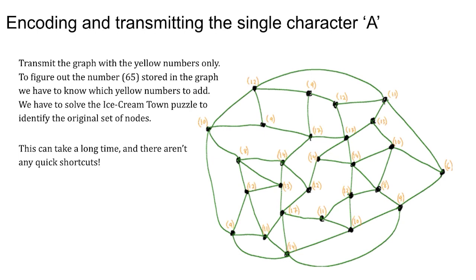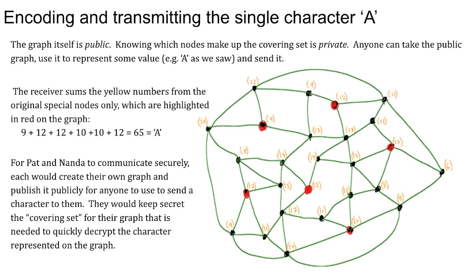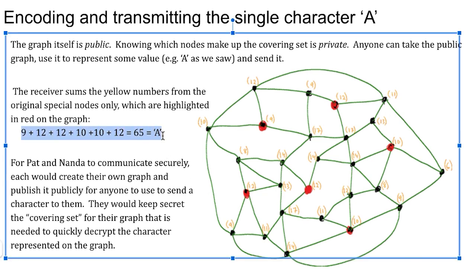So then how does it work? How do we transmit the letter using this? So given this graph, if we send it, if the person knows what those six are, these six, the yellow numbers, represents the sum of all the reachable nodes from those. And so if I take that 9 plus the 12 plus the 10, 12, 12, and 10, if I add those up, they represent the entire graph. And those numbers added up equals 65, which is our capital A.